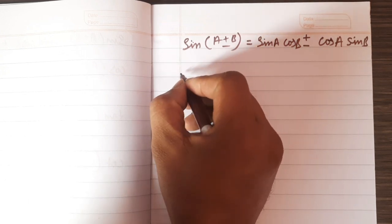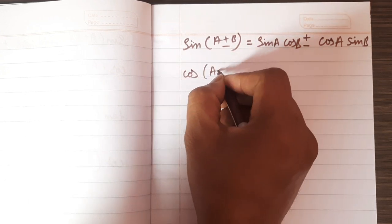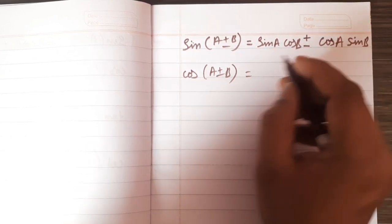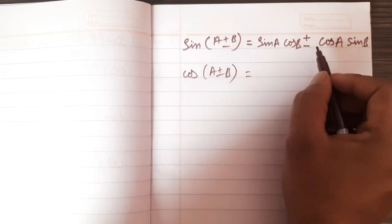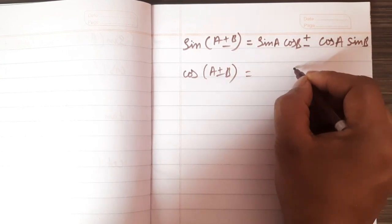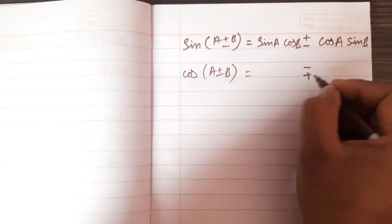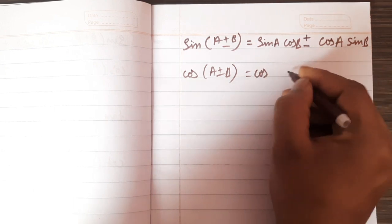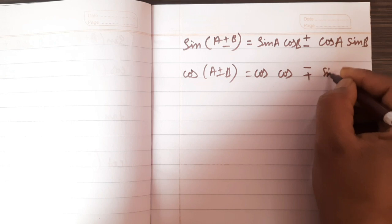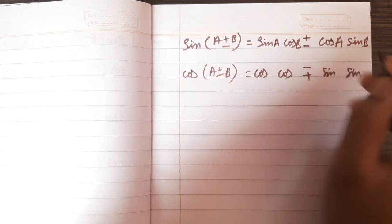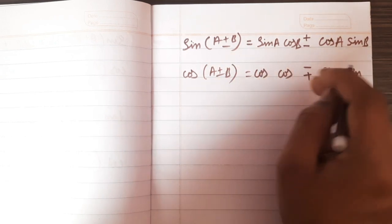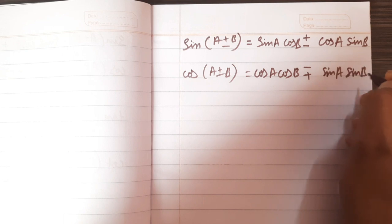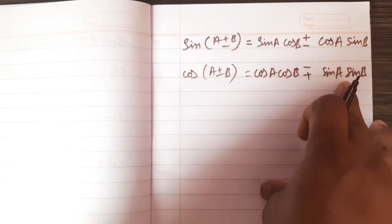For cos, it is the total opposite. The sign is reversed — plus becomes minus, minus becomes plus. Cos is totally opposite in sign convention compared to sin.